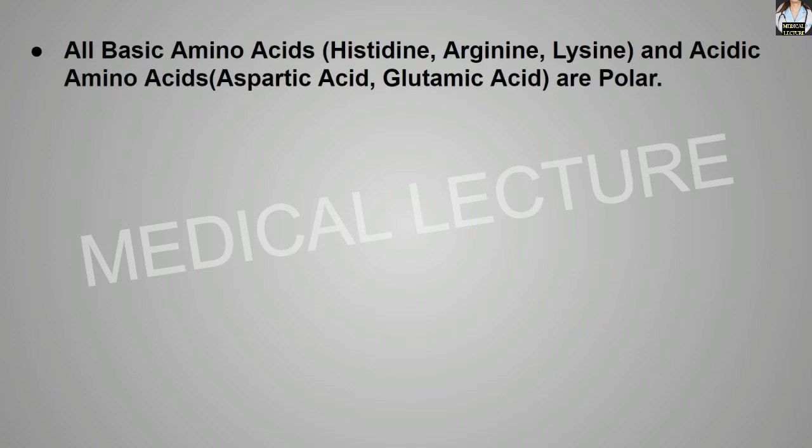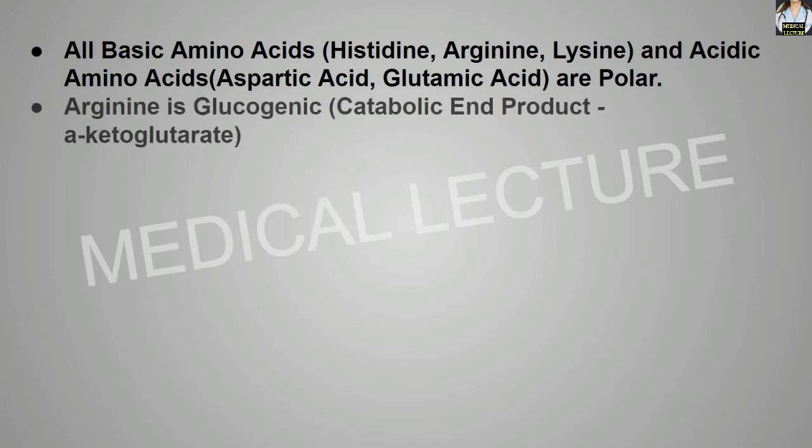All basic amino acids — histidine, arginine, and lysine — and acidic amino acids — aspartic acid and glutamic acid — are polar in nature. Arginine is glucogenic, and its catabolic end product is alpha-ketoglutarate.